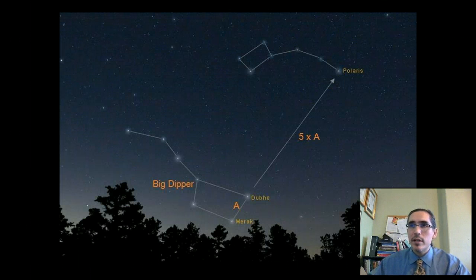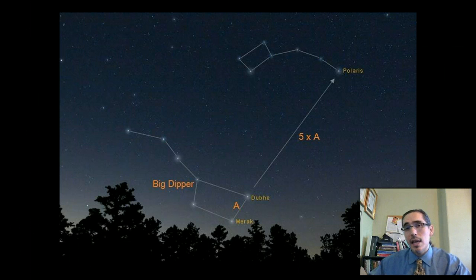When Polaris is visible in front of you, you are facing north. Behind is south, east is to the right, and west is to the left.